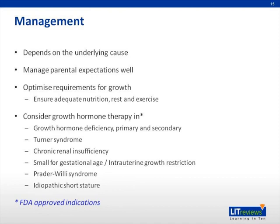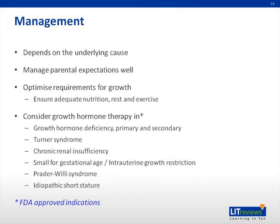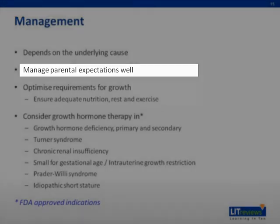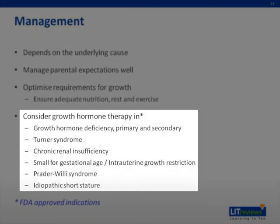Once investigations are complete, a management plan is needed. If there is a specific pathology, the management must address it. In the absence of abnormal results, it is vital to discuss parental expectations and to optimize the child's requirements for growth, such as adequate nutrition, enough sleep, and exercise. Growth hormone therapy can be considered in the following FDA-approved conditions: growth hormone deficiency, Turner syndrome, chronic renal insufficiency, small for gestational age or intrauterine growth restriction, Prader-Willi syndrome, and idiopathic short stature. Other conditions have also been treated with growth hormone.